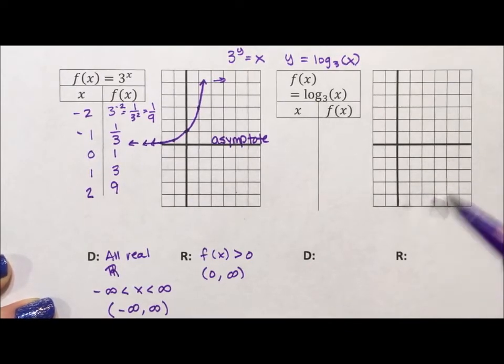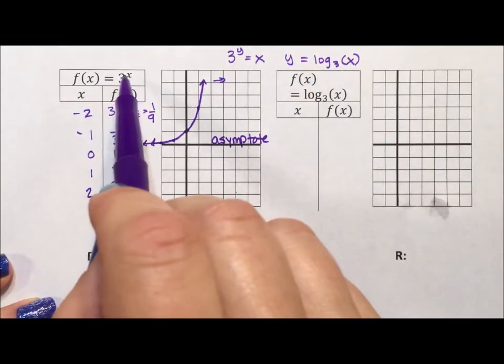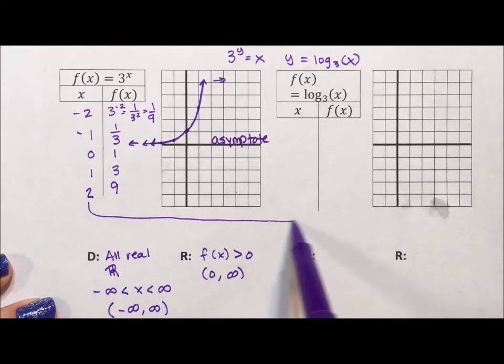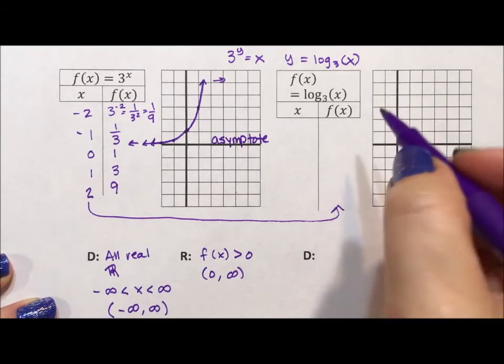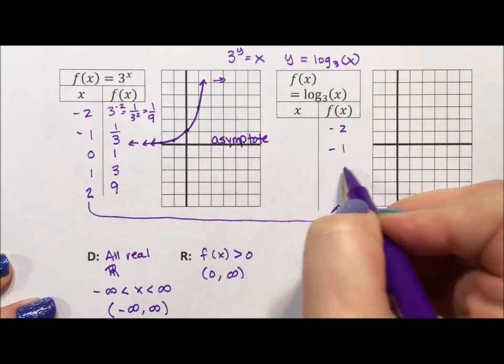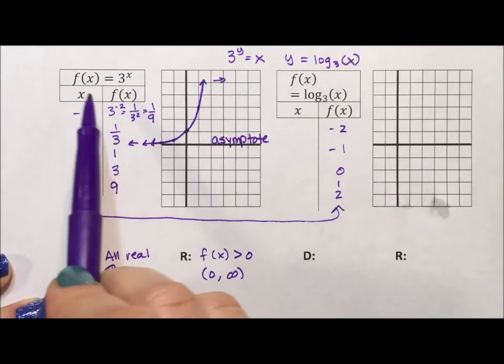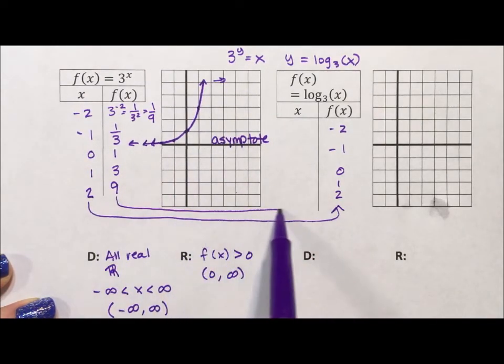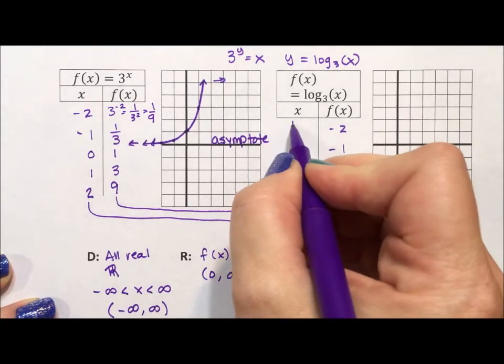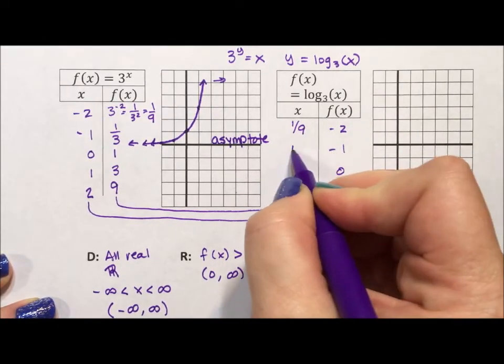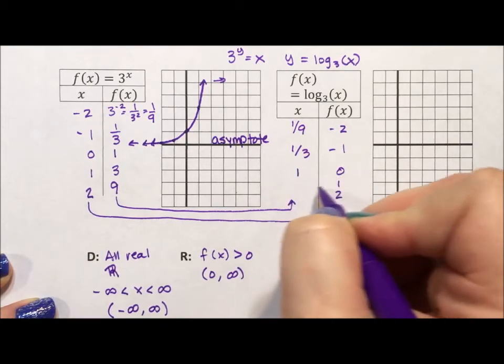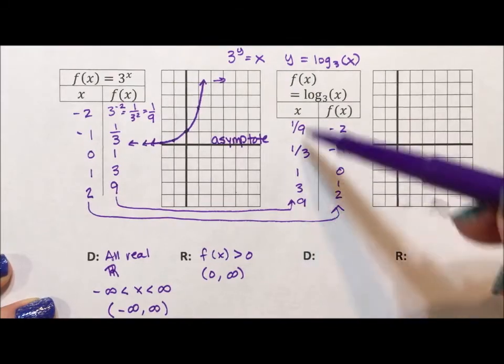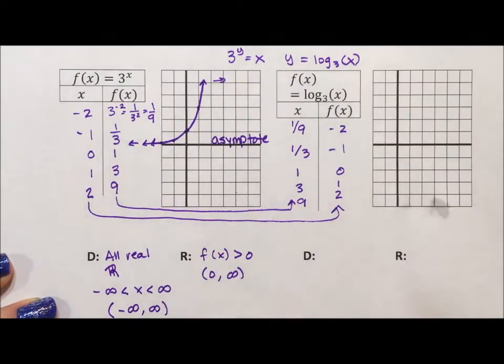Okay, so the thing is, we said these are inverses. So where x is here, y is here. So we can take all our x values and make them our y values. So we can put in the negative two, the negative one, the zero, one, two. Where y is here, we have x. So we can transfer all of our y values to our x values. So that we have one ninth, negative two, one third, negative one, one, zero, three, one, nine, two. This would be a hard list to come up with on the fly, but using the inverse, it helps.